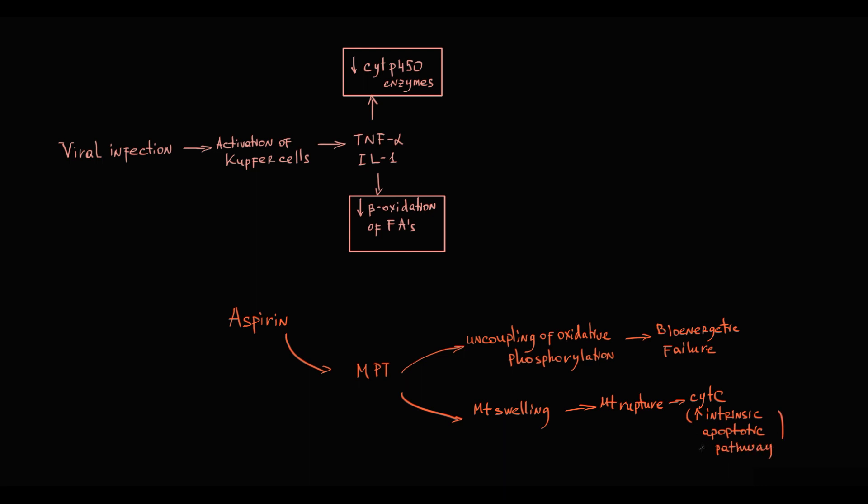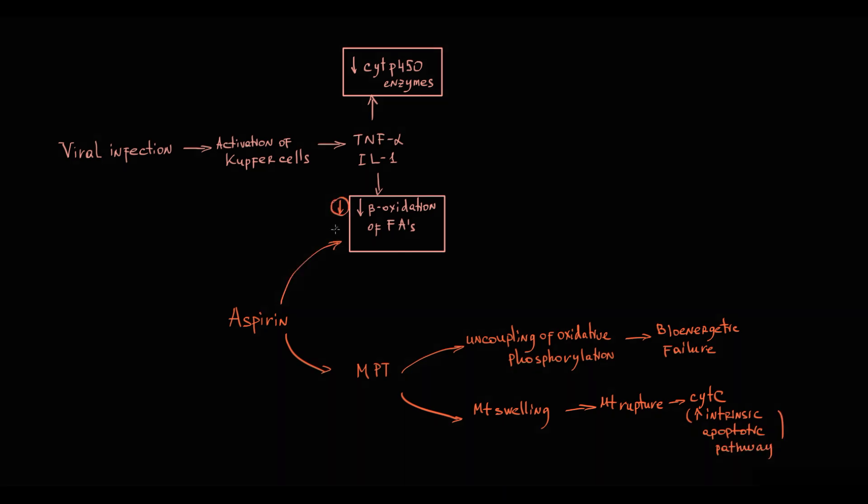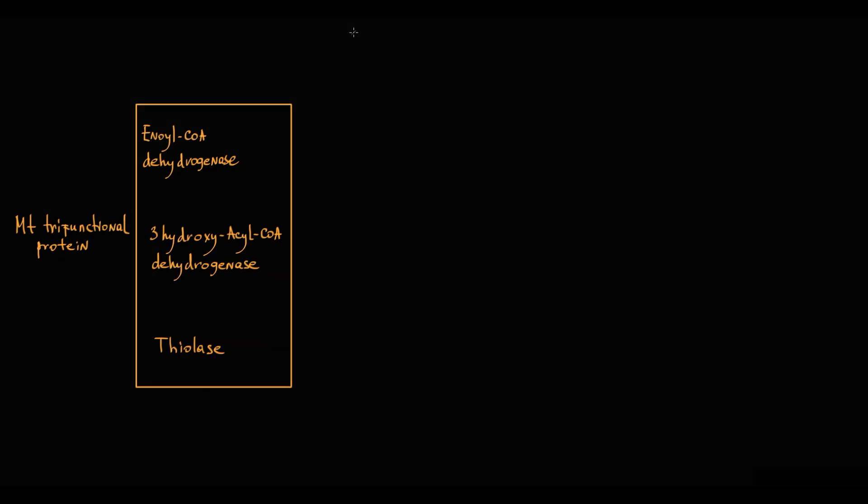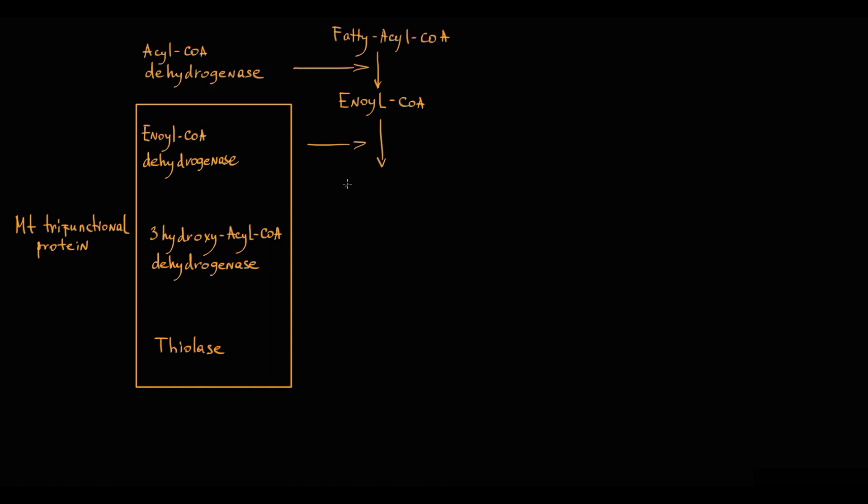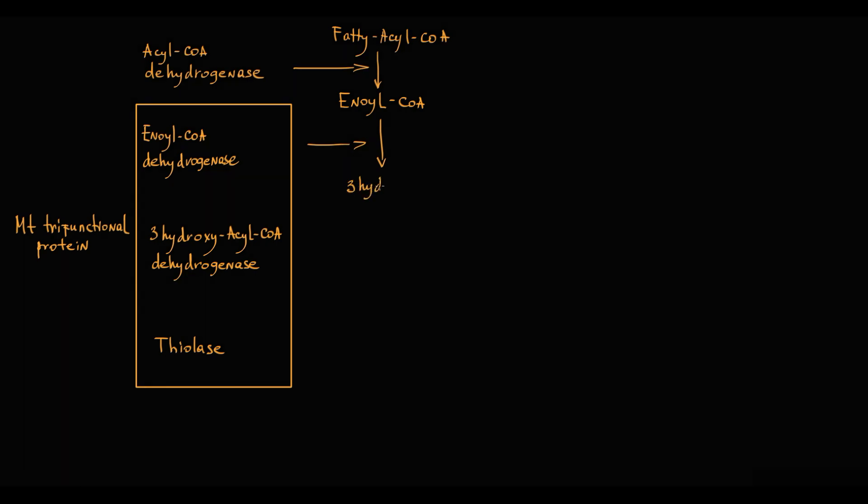Aspirin also disrupts beta oxidation of fatty acids. On inner mitochondrial membrane is located mitochondrial trifunctional protein, a complex of three enzymes that catalyze three steps in beta oxidation. Initially fatty acyl-CoA is converted by acyl-CoA dehydrogenase to enoyl-CoA.